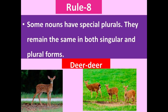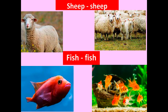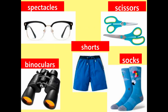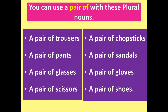Rule number eight: some nouns have special plurals — they remain the same in both singular and plural forms: deer → deer, sheep → sheep, fish → fish. Some nouns are always plural: trousers, pajamas, jeans, spectacles, scissors, shorts, binoculars, socks. You can use 'a pair of' with these plural nouns.